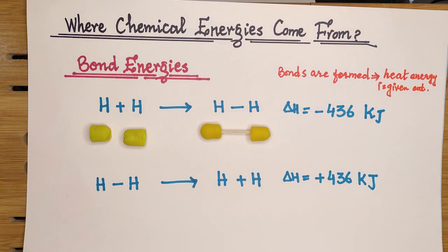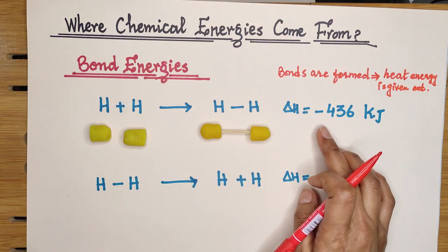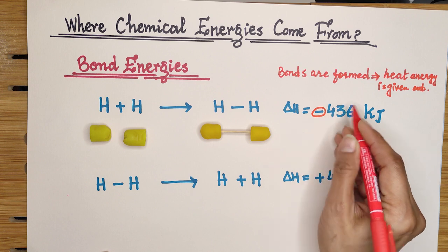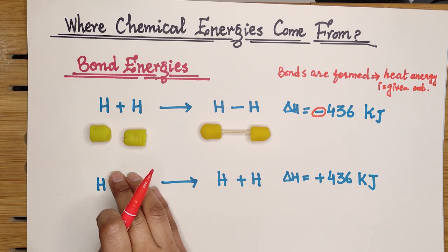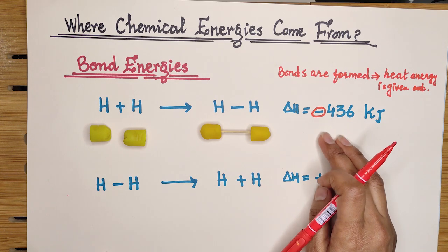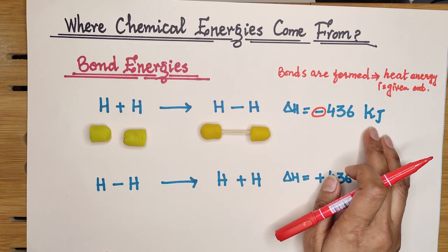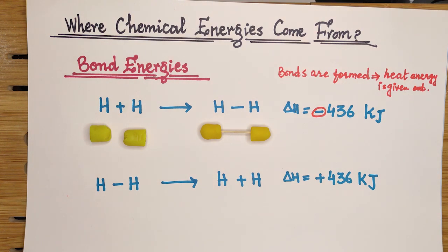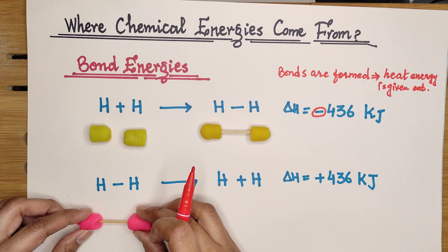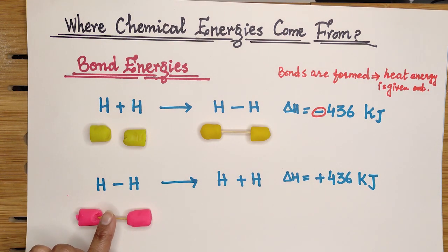When a covalent bond is formed in the hydrogen molecule, energy is released — represented as −436 kJ. When two hydrogen atoms combine to form one molecule of hydrogen gas, 436 kJ of energy is released. Bond formation is therefore an exothermic change, representing a loss of heat. The same amount of energy is absorbed when the covalent bond is broken.